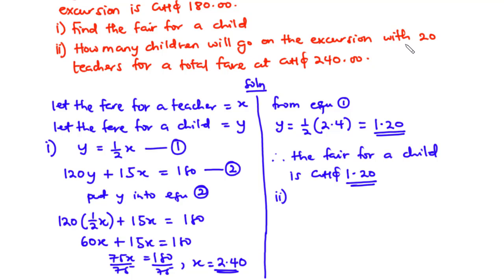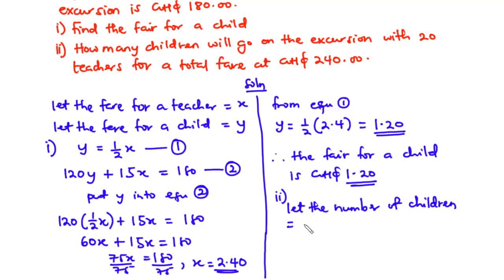Now let's solve part (ii): how many children will go on the excursion with 20 teachers for a total fare of 240 Ghana cedis? Since we know the fare for a child (1.20) and the fare for a teacher (2.40), we let n be the number of children joining the 20 teachers. So: 1.20 times n plus 2.40 times 20 equals 240.